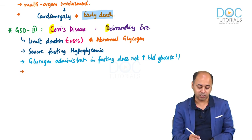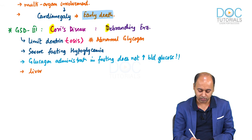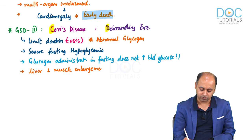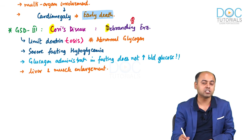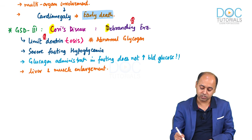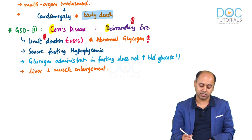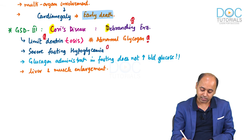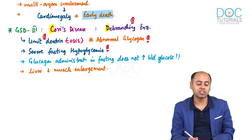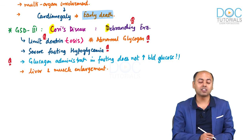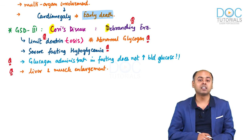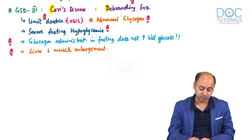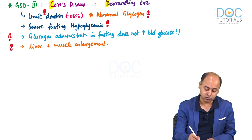The enzyme is deficient in both liver and muscle, so both liver and muscle enlargement will occur. Key points to note: the deficient enzyme is debranching enzyme (C followed by D to remember); the condition is also known as limit dextrinosis; the type of glycogen stored is abnormal; clinically there is severe fasting hypoglycemia; glucagon in the fasting state does not raise blood glucose; and both liver and muscle are enlarged in Cori's disease, GSD type 3.